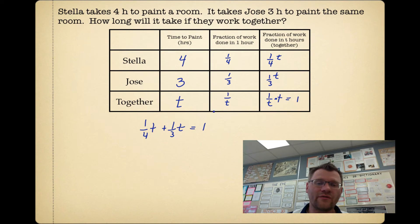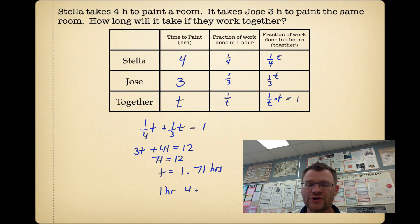So we now have a rational equation. We can solve this thing by multiplying everything by 12. So we end up getting 3t+4t equals 12. When I multiply everything by 12, that gives me 7t equaling 12, so t equals 1.71 hours, and exactly that would be 1 hour and 42 minutes.